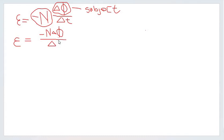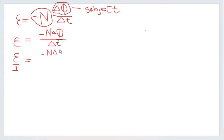So it's a matter of just rewriting it. You rewrite: negative N, then the change in magnetic flux, all over the change in time, delta t. The next step is to recognize that I can write the left-hand side — that epsilon symbol, the induced EMF, that Greek letter — simply as epsilon over one, since any value divided by one is itself.